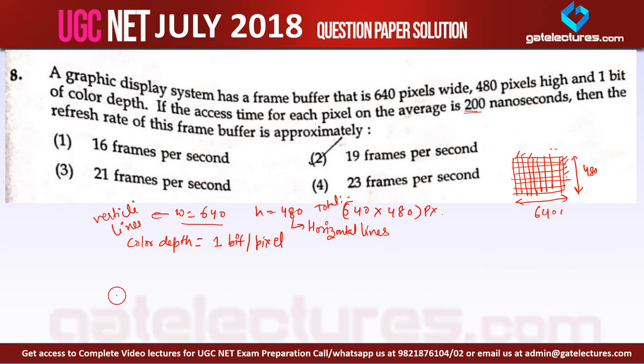Now the memory required for the total pixel is 640 multiplied by 480 multiplied by 1 bit. Because for every pixel we are storing 1 bit of information. So remember it is bit, it is not bytes.